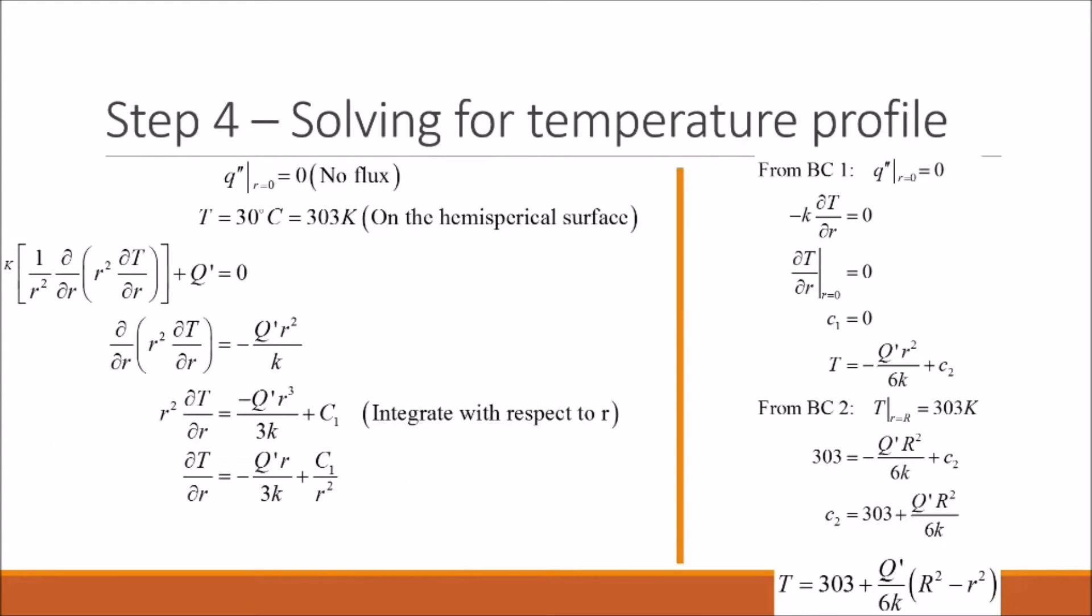Okay, so now we have to do a bunch of math. So we take our general equation and we take our boundary conditions. We integrate our general equation and we apply our boundary conditions to solve for our constant values. And we end up with this expression right here for our temperature profile with respect to r, or the radius of the brain.